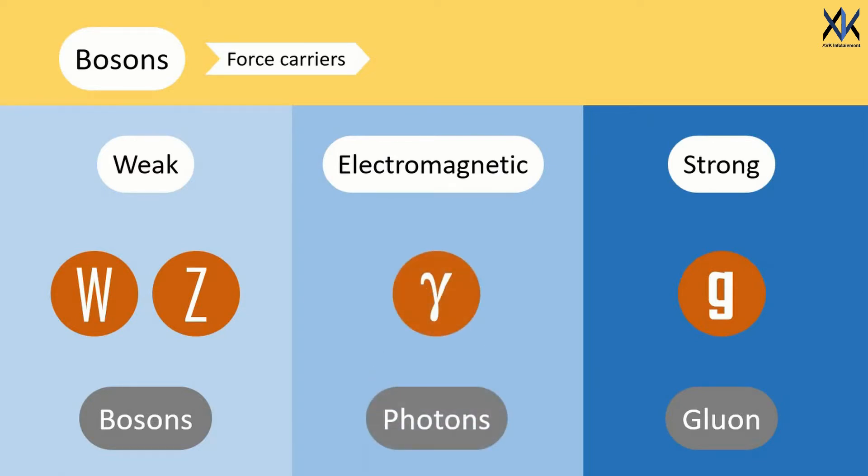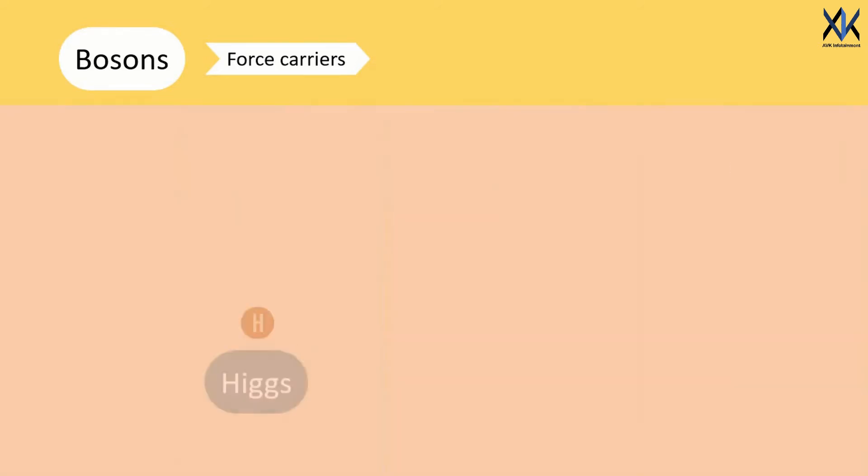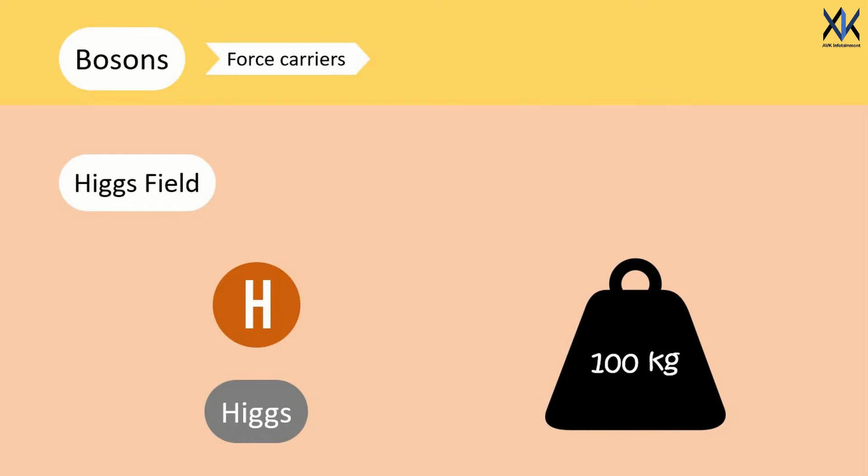And photons which carry electromagnetic force. The reason why we see things. And why we are alive. Also, there is Higgs boson. Which is the force carrier of the Higgs field. The one which gives a particular number to your mass depending on how strongly you interact with the field.